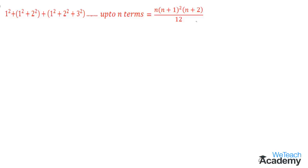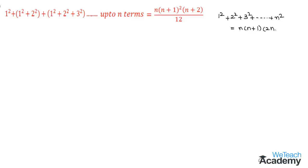In our previous video we proved the formula for the sum of squares of n terms, which is 1² + 2² + 3² + ... + n² = n(n+1)(2n+1) divided by 6.